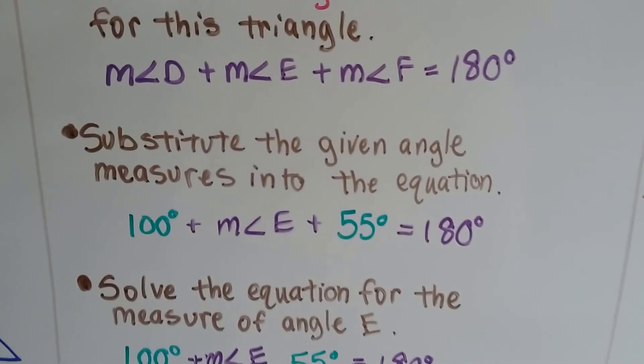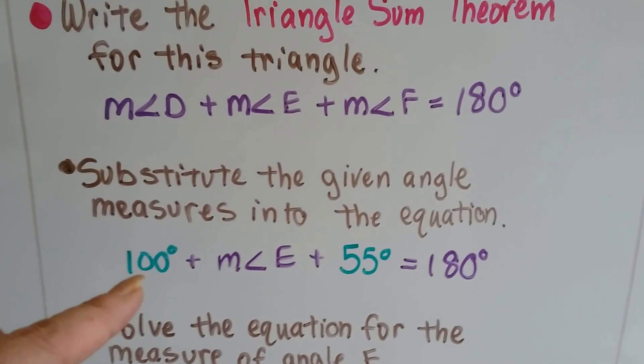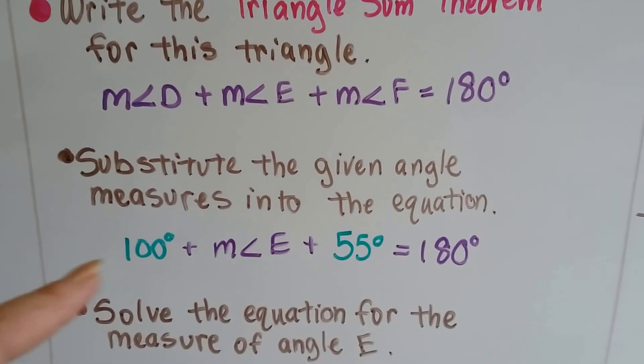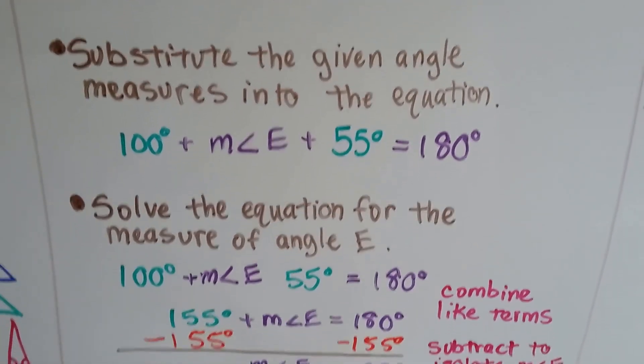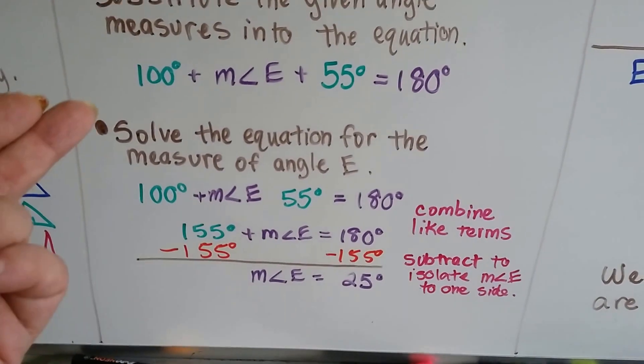We could substitute the given angle measures into the equation. The measure of angle D is 100, F is 55. So we have 100 degrees plus the measure of angle E plus 55 degrees equals 180. We solve the equation for the measure of angle E.